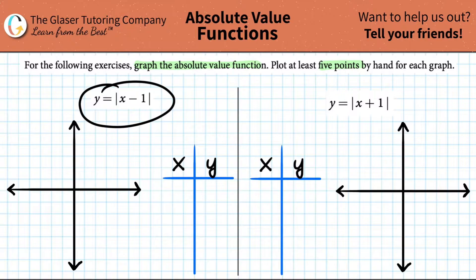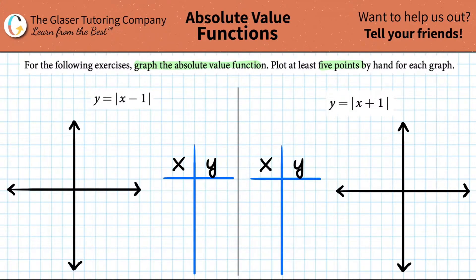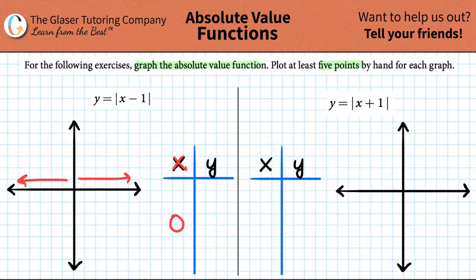The first graph that they want us to draw is y equals the absolute value of x minus one. Normally, if we have to plot at least five points, you always want to have a point right at the origin, where x is zero. Then I just have to pick four more points — a couple in the negative x direction and a couple in the positive x direction to get the whole scope of the graph.